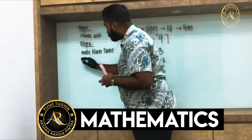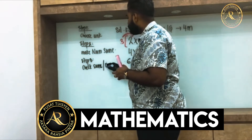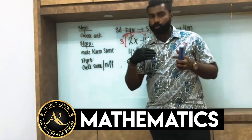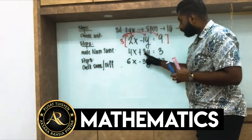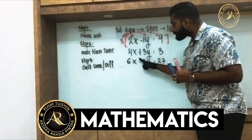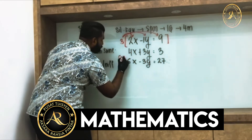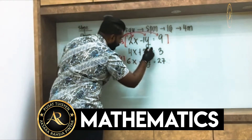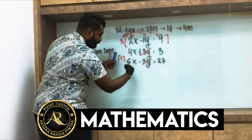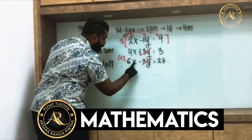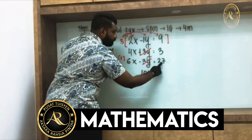Step number three: check whether the y terms are the same or different. We have negative 3y and positive 3y — that's plus and minus, so they are different. When different, we do plus. Put a plus bracket between the equations and eliminate the y terms. Remaining: 4x plus 6x.